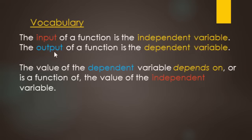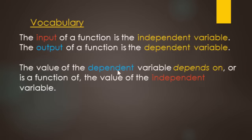Looking at inputs versus outputs: in the last example, your distance was the output and your friend's distance was the input. Inputs are the independent variables, and the output is the dependent variable. Your distance was the output because it depended on how far your friend ran. The dependent variable is a function of the independent variable — the output is a function of the input.